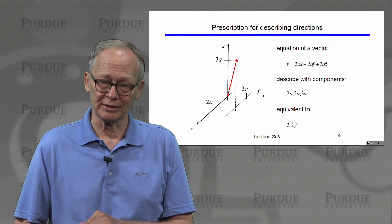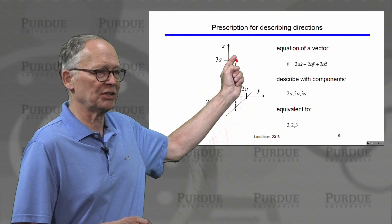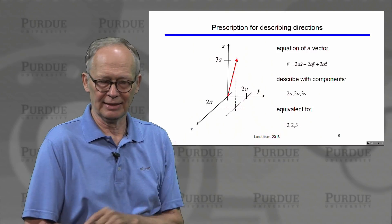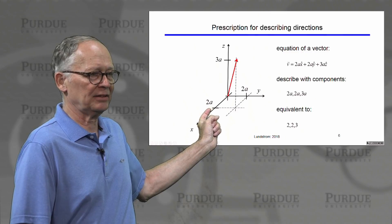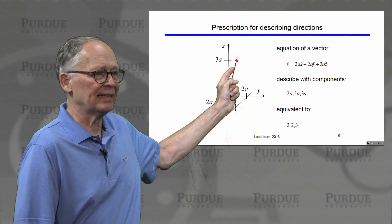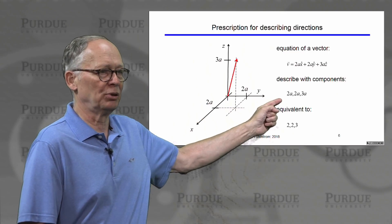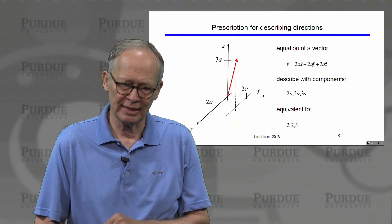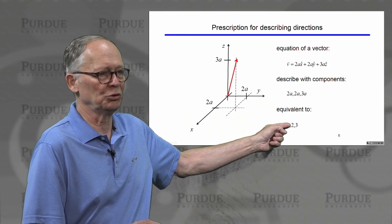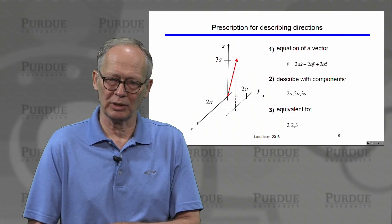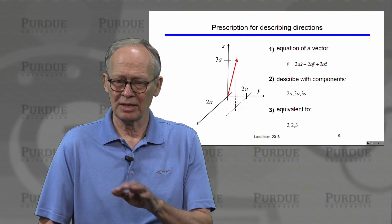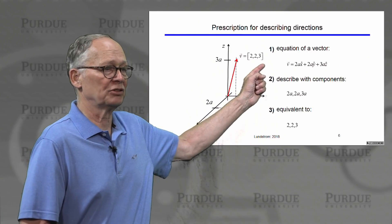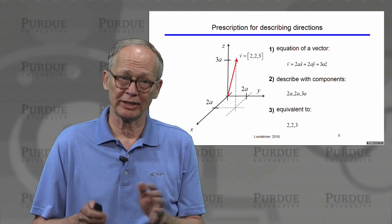We also want to describe directions in crystal lattices — specifically, the direction of a vector. The way we specify a vector is by giving its x, y, and z components. This particular vector has an x-component of 2a, a y-component of 2a, and a z-component of 3a. Since we're doing everything in terms of lattice spacing, there's no need to carry the a around, so we describe this vector by the components 2, 2, and 3. We enclose those numbers in square brackets. The square brackets indicate we are talking about a vector and not a plane.